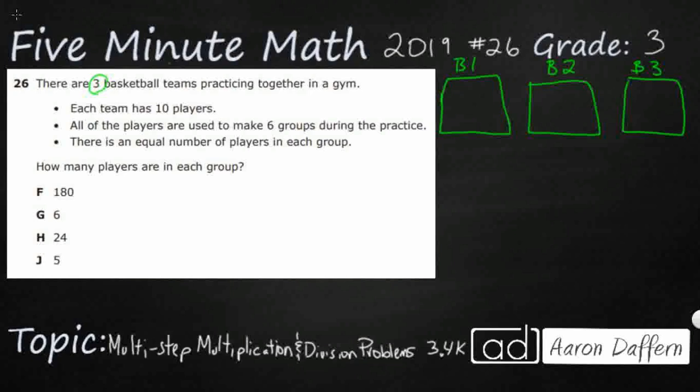Each team has 10 players. So I've got 10, 10, and 10. So what I need to know is that there are a total of 30 basketball players there. There are 10 on each of three teams. I could do 10 plus 10 plus 10, or I can do three sets of 10. Three times 10, that also makes 30.